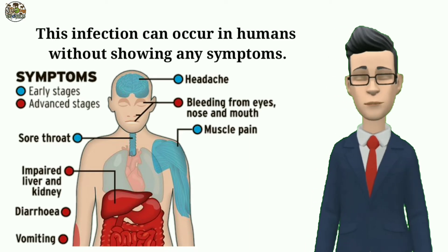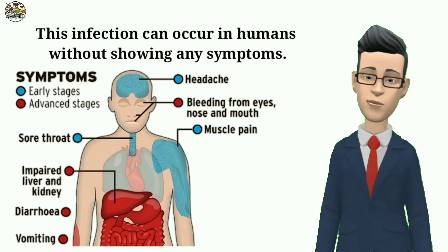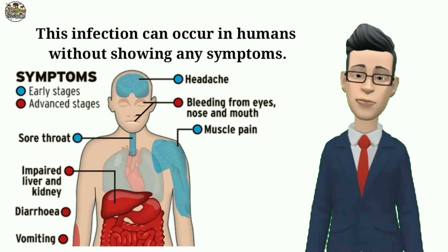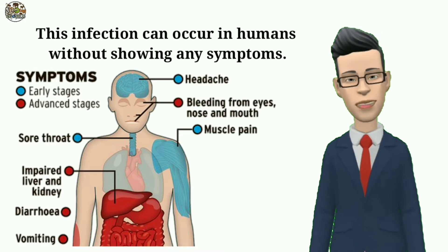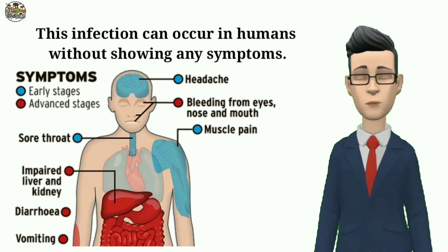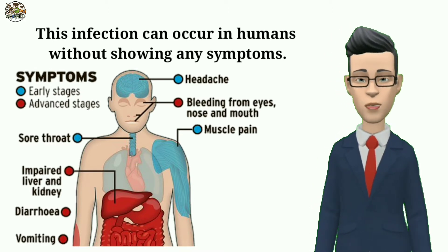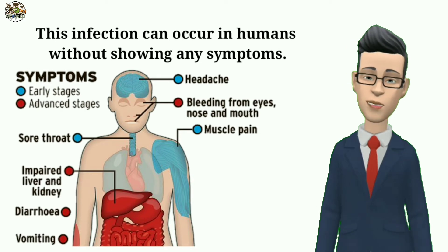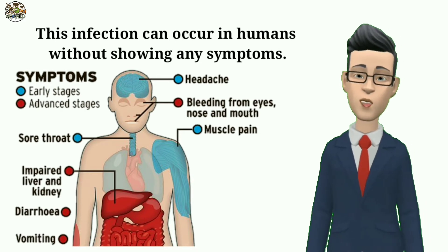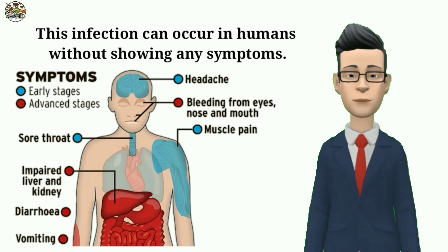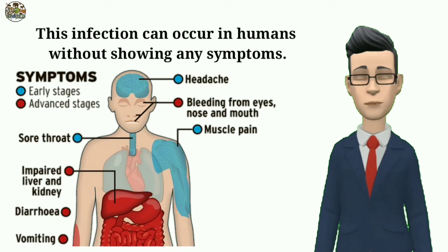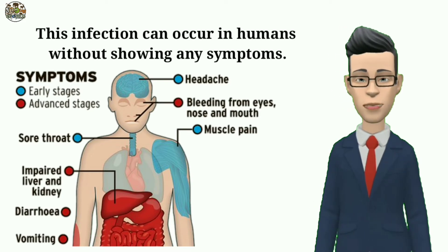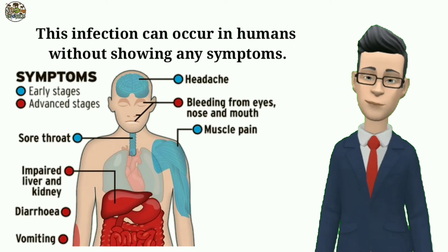The infection progresses to acute respiratory infection causing interference in breathing. During this phase, people experience atypical pneumonia and acute respiratory distress, which further cause severe problems. It further advances to fatal encephalitis, which means causing inflammation of the brain tissue.